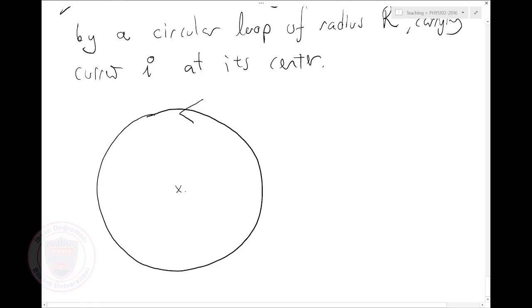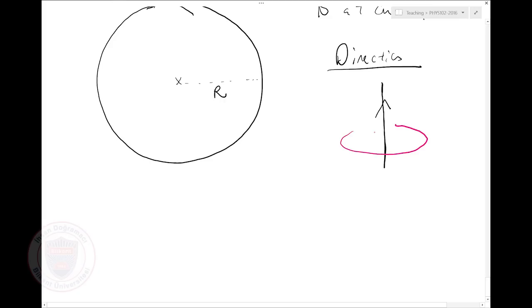I have a current loop of radius R carrying current I, and I'd like to find the magnetic field at the center. First let's find the direction. If I have an infinite wire, it creates a magnetic field that circles it — if I put my thumb along the current, it creates a magnetic field like my four fingers indicate.